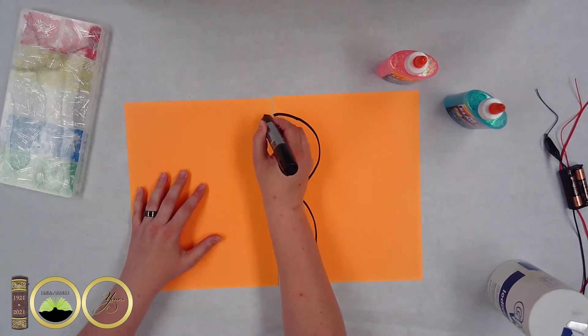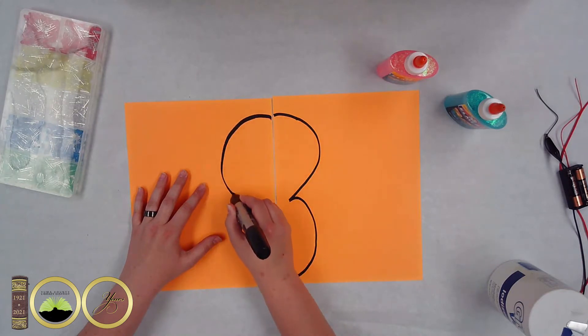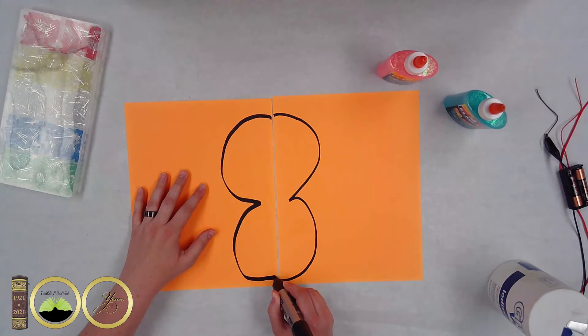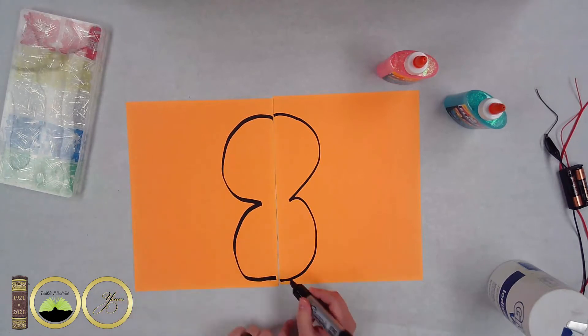You'll want to start at the top middle and then end at the bottom middle. As long as it ends at the top and the bottom in the middle you'll be fine. So I kind of just drew a little eight there. Make it simple so you guys can understand.